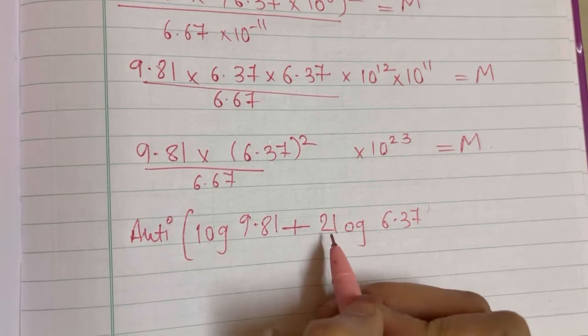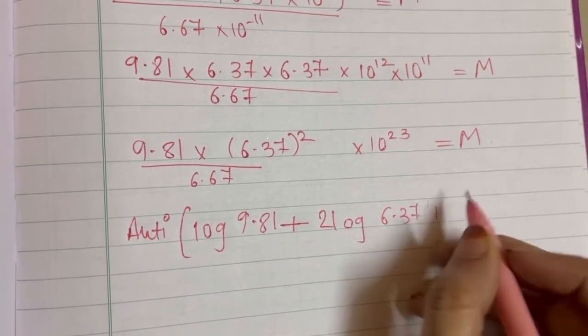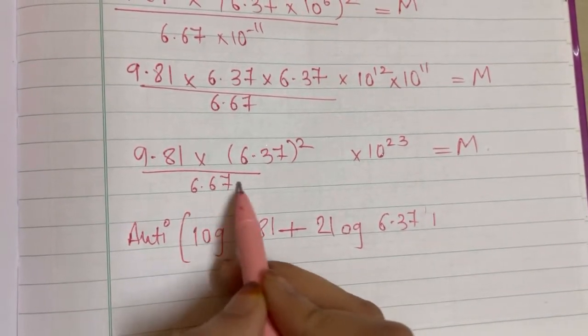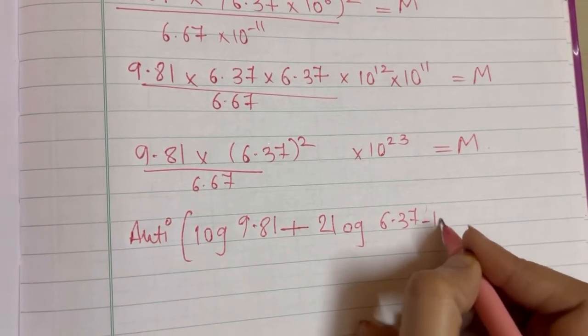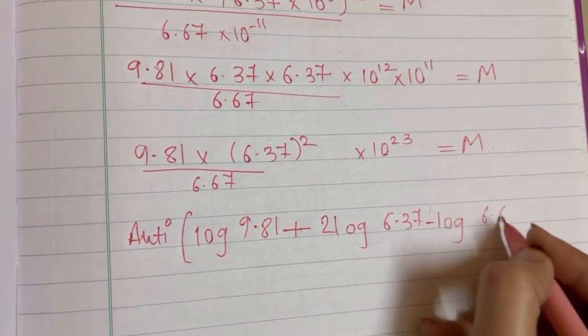No not plus, 6.67 is in denominator, so we will write minus log of 6.67.